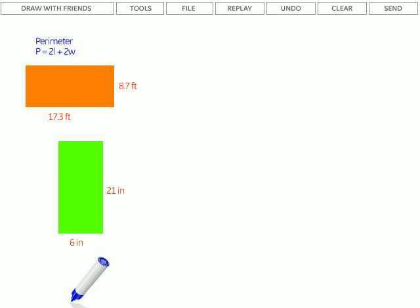The distance around a figure is known as the perimeter. And we can find the perimeter of a rectangle by using this formula right here: P equals 2 times the length plus 2 times the width.